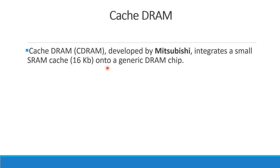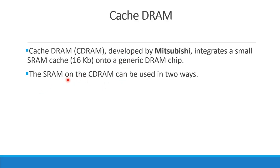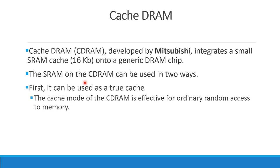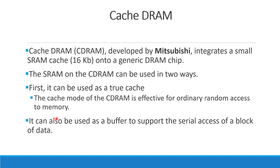CDRAM is a normal DRAM that also includes a small amount of SRAM. In the same way as SDRAM, CDRAM uses a block of data with a buffer. It uses a buffer RAM — specifically SRAM — alongside the DRAM to increase speed.